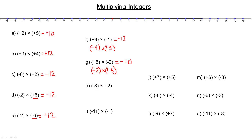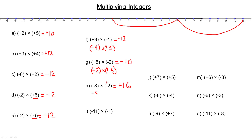Negative 8 times negative 2. If this were a positive 2, we would go negative 8 twice. But because we're multiplying by negative 2, we're going to do that twice in the opposite direction, and that ends up being positive 16. If I had negative 8 multiplied by positive 2, I would go 8 twice in the negative direction, but since I'm multiplying by negative 2, I end up going in the opposite direction — that's why we get positive 16.